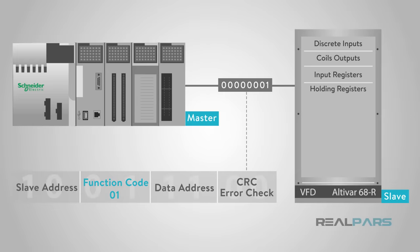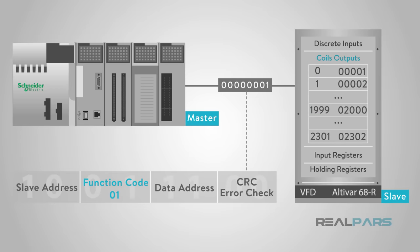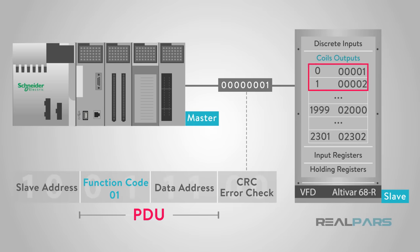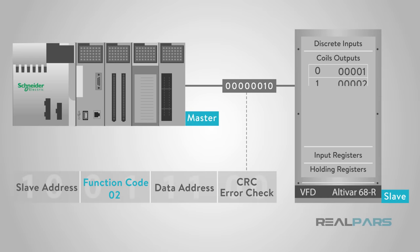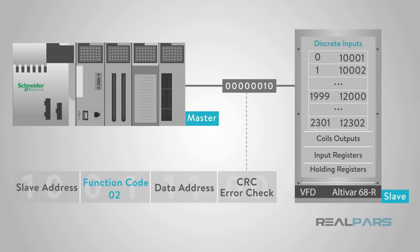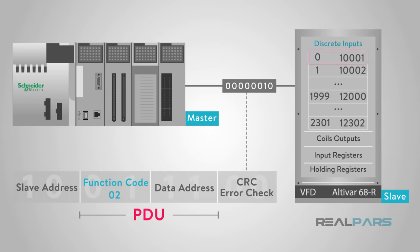Function code 01, ReadCoilsCode, is used to read from 1 to 2,000 contiguous registers for the status of coils in a slave device. The request PDU specifies the starting address of the slave's memory address of the first coil and the number of coils to read. Function code 02, ReadDiscreteInputsCode, is used to read from 1 to 2,000 contiguous status of discrete inputs in a remote slave. The request PDU specifies the starting address of the first input and the number of coils to read from the slave device.